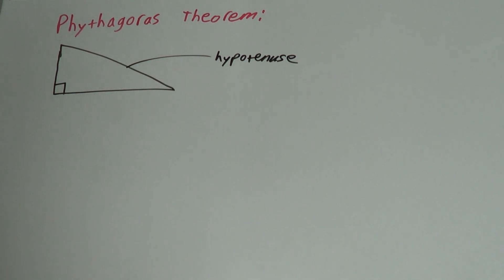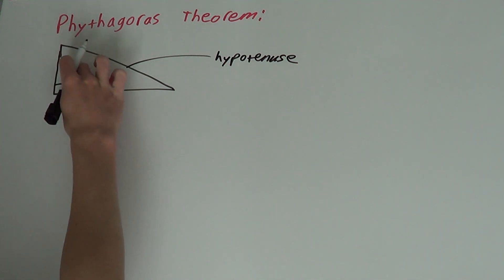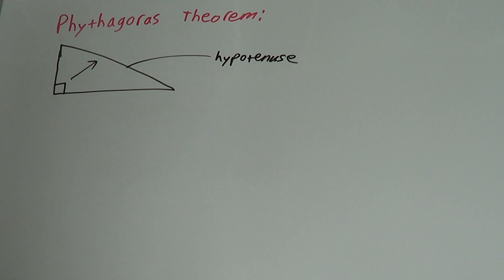There's two ways you know it's the hypotenuse. First of all, just by looking at it, it's the longer side. And second of all, it's always directly opposite to the right angle.